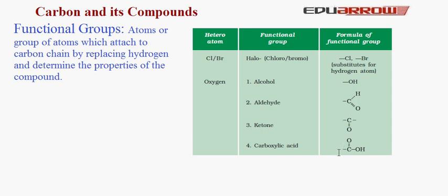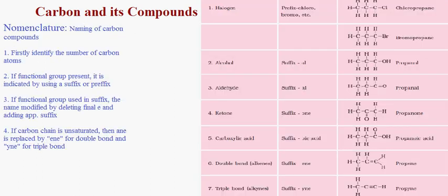Let us now talk about nomenclature, i.e. naming of carbon compounds. There are certain rules for naming carbon compounds. Rule 1: Identify the number of carbon atoms. If there are 4 carbon atoms then we use the prefix 'but-'. If there are 5 carbon atoms then we use the prefix 'pent-', and accordingly we use the prefix according to the number of carbon atoms present in the compound.